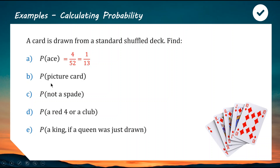Probability of a picture card: picture cards are the royalty — jack, queen, and king. There are three of those per suit and four suits, so 3 times 4 gives 12 picture cards out of 52. Simplified, that's 3 out of 13, because in the 13 card values, three of them are picture cards: jack, queen, king.